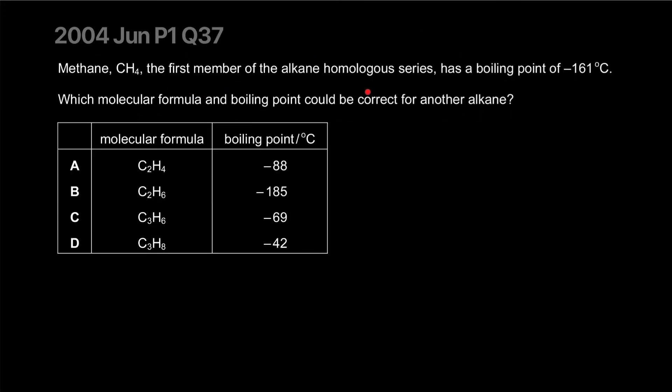Methane, the first member of the alkane homologous series, has a boiling point of negative 161°C. Which molecular formula and boiling point could be correct for another alkane? Anything higher is going to have a higher boiling point. Negative 150 is actually a higher value than negative 160. It's larger because it's closer to zero.